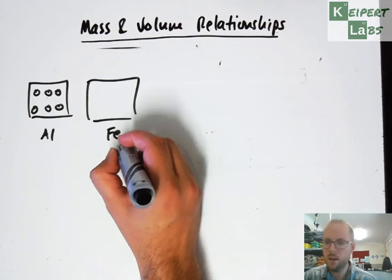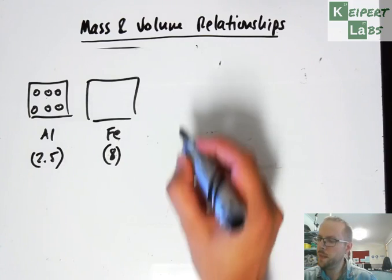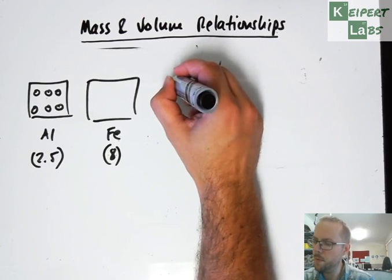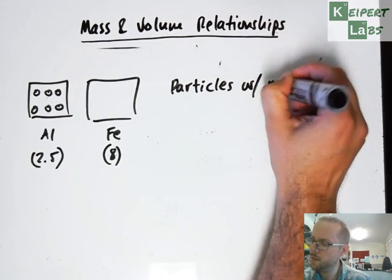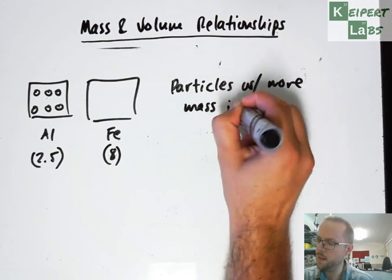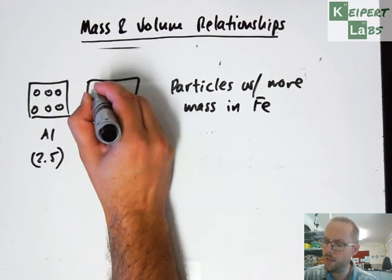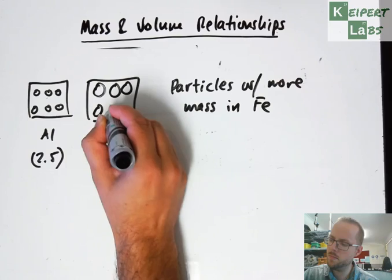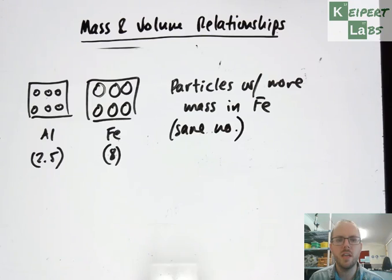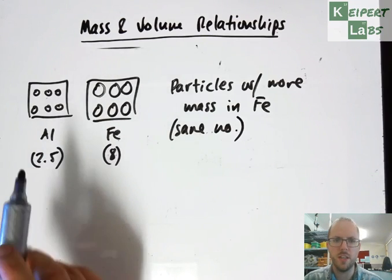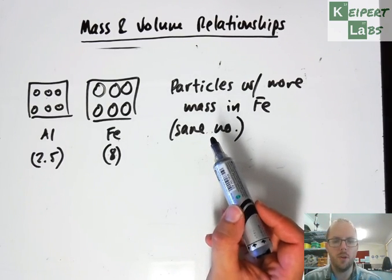Now the first explanation, because remember that iron was much bigger, around about 8 compared to aluminum which was 2.5, so one explanation is that we've got particles with more mass in iron. That is, the particles themselves, they've got more mass. So I'm going to try and represent that as like big chunky particles. So I've got the same number of particles in a given space. We just have to use your imagination to think that these boxes are the same size. So one option is we've got particles with more mass. The iron particles weigh a lot more.